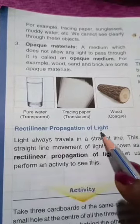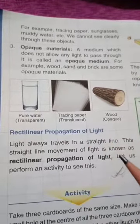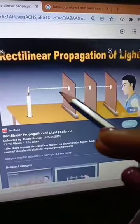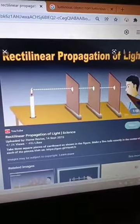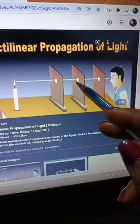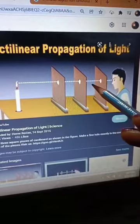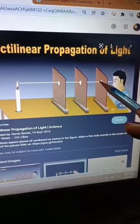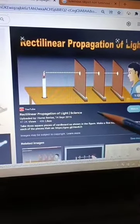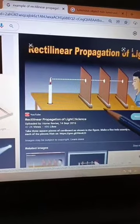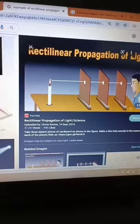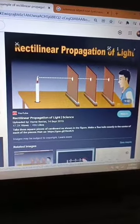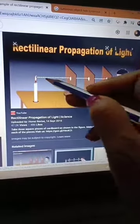Next is rectilinear propagation of light. Light travels in a straight line, and this is known as rectilinear propagation of light. You can see this activity: take three cardboards of the same size and make a small hole at the center of all three. Arrange the cards one behind the other such that all the holes lie along a straight line. Place a lighted candle in front of the first card and look through the hole in the last card — you will be able to see the flame. This activity proves that light travels along a straight line.